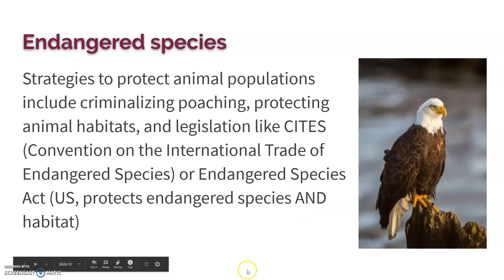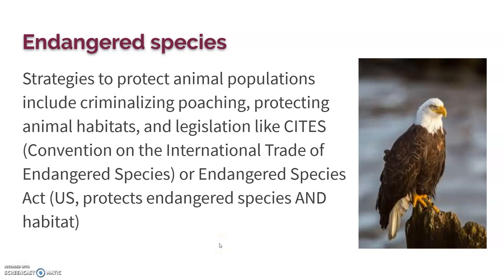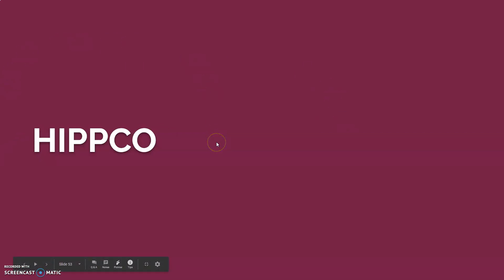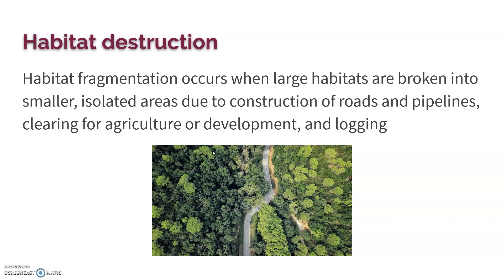The Endangered Species Act has brought many species back from near extinction. One example is the bald eagle — when it was discovered that DDT was negatively impacting their population, DDT production was stopped and they bounced back. HIPCO stands for the six ways biodiversity is lost, in order of the damage each causes: Habitat loss, Invasive species, Population, Pollution, Climate change, and Over-exploitation.